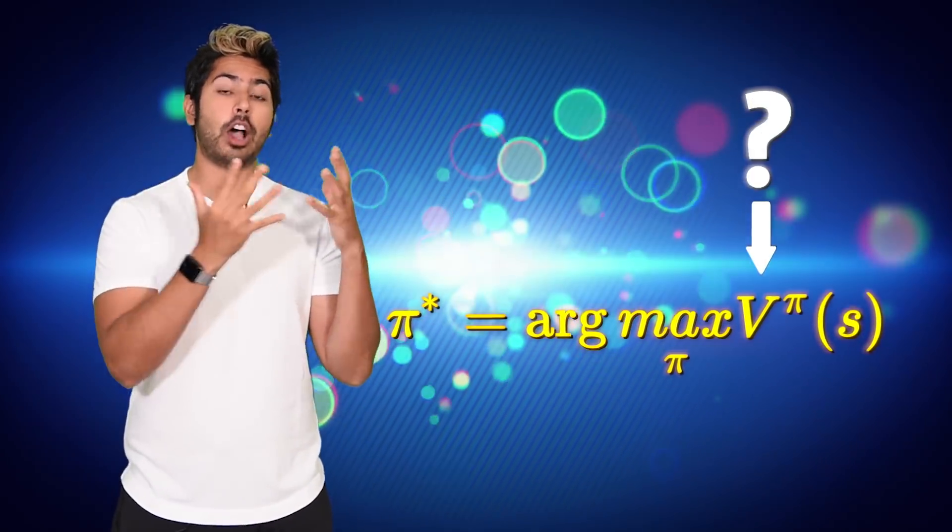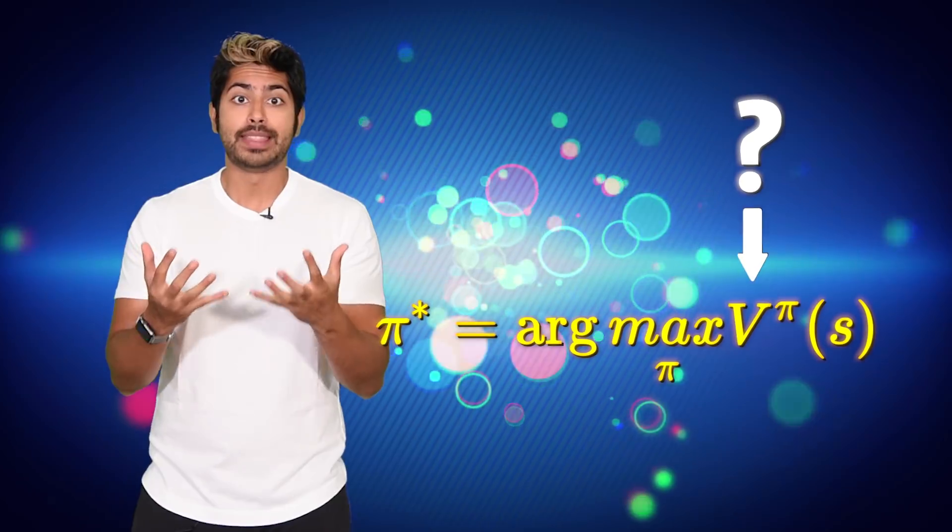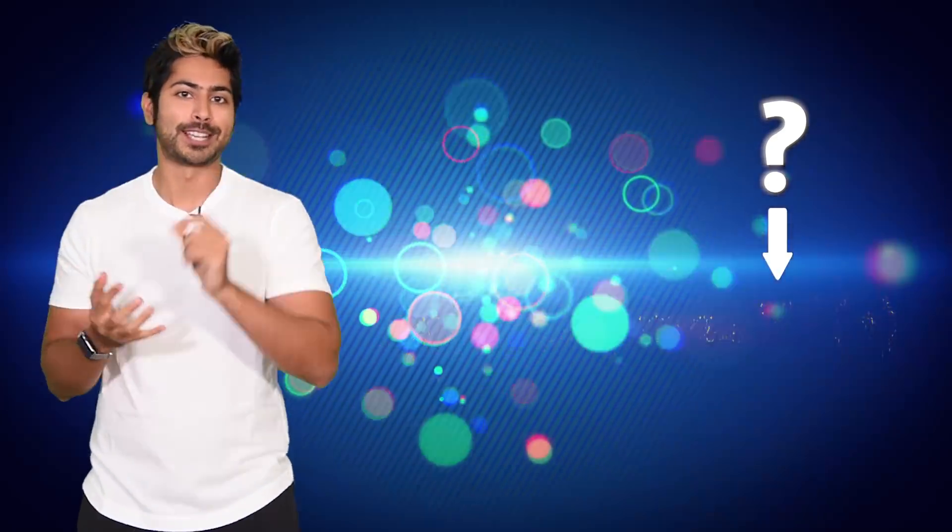But that leaves the question, how do we find the optimal action value function? It's the intermediary step that's allowed us to find the optimal policy, and it's also the topic for the next video.